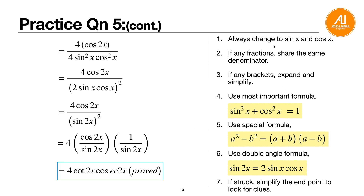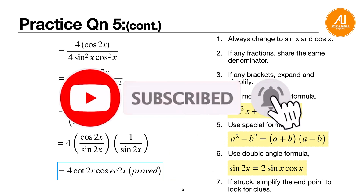To recap all seven tips: one, always change to sine and cosine; two, make fractions share the same denominator; three, expand brackets and simplify; four, use sine squared plus cosine squared equals one; five, use the special formula a squared minus b squared equals (a plus b)(a minus b); six, for double angle questions use the double angle formula for sine 2x, cosine 2x, or tangent 2x; and seven, whenever stuck, simplify the endpoint to look for clues.